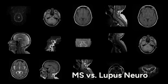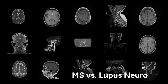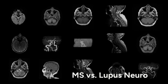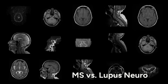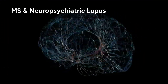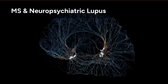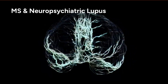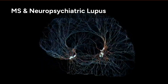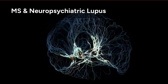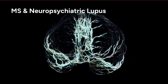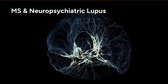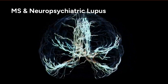Welcome to our in-depth look at the complexities of diagnosing and treating multiple sclerosis and neuropsychiatric lupus. Multiple sclerosis, or MS, is a chronic autoimmune disease affecting the central nervous system. Neuropsychiatric lupus, or NPL, on the other hand, is a manifestation of systemic lupus erythematosus impacting the brain and nervous system.